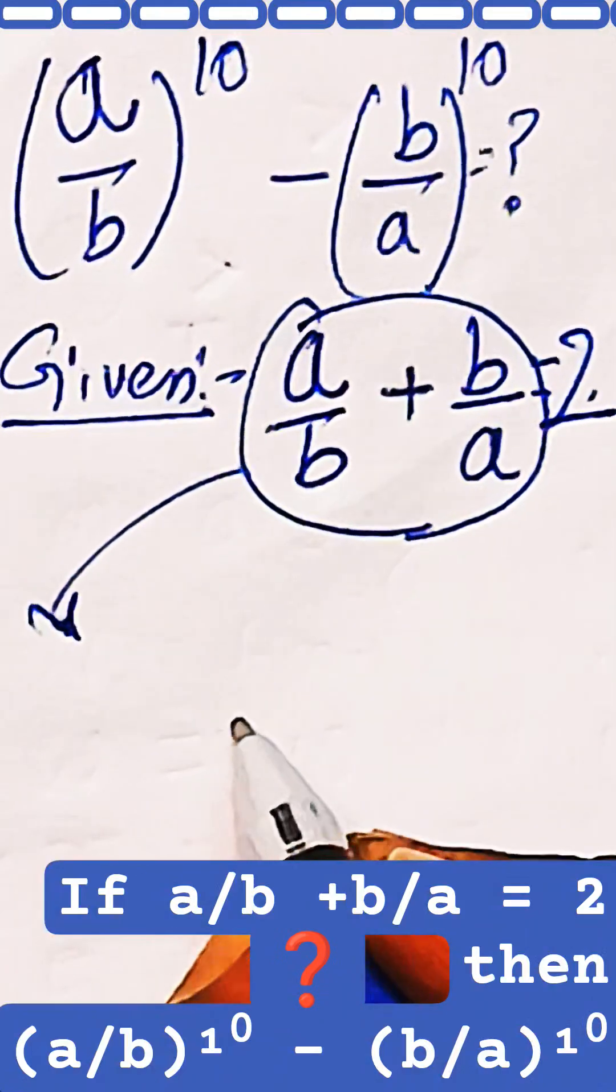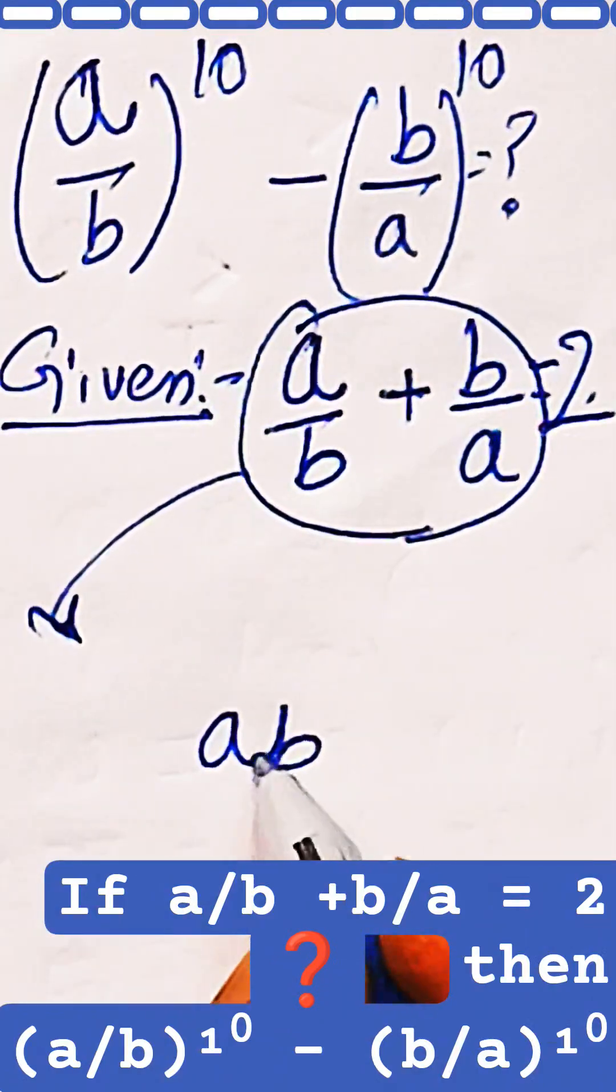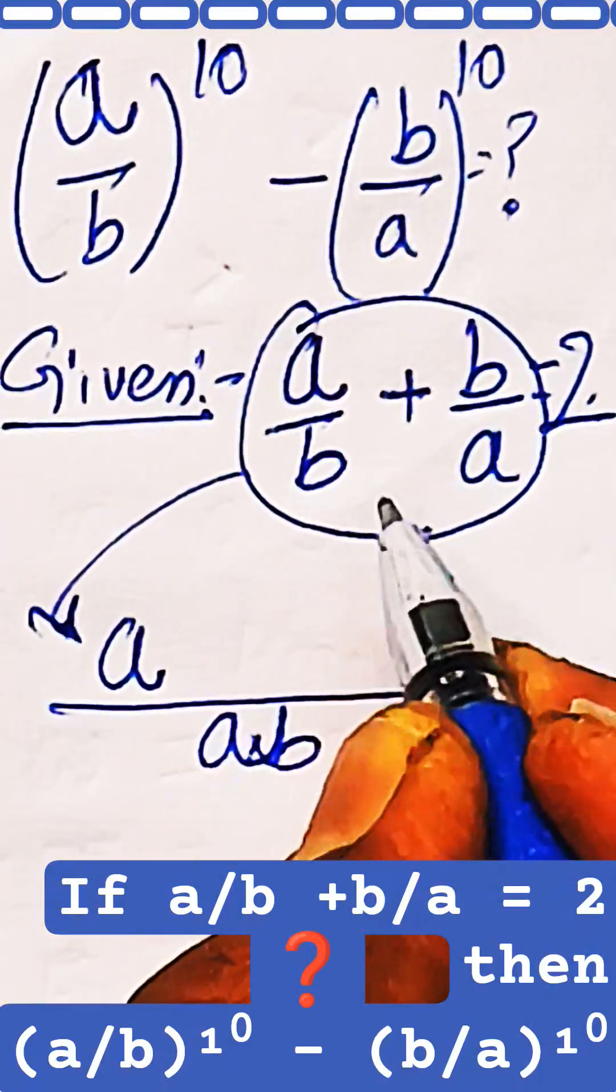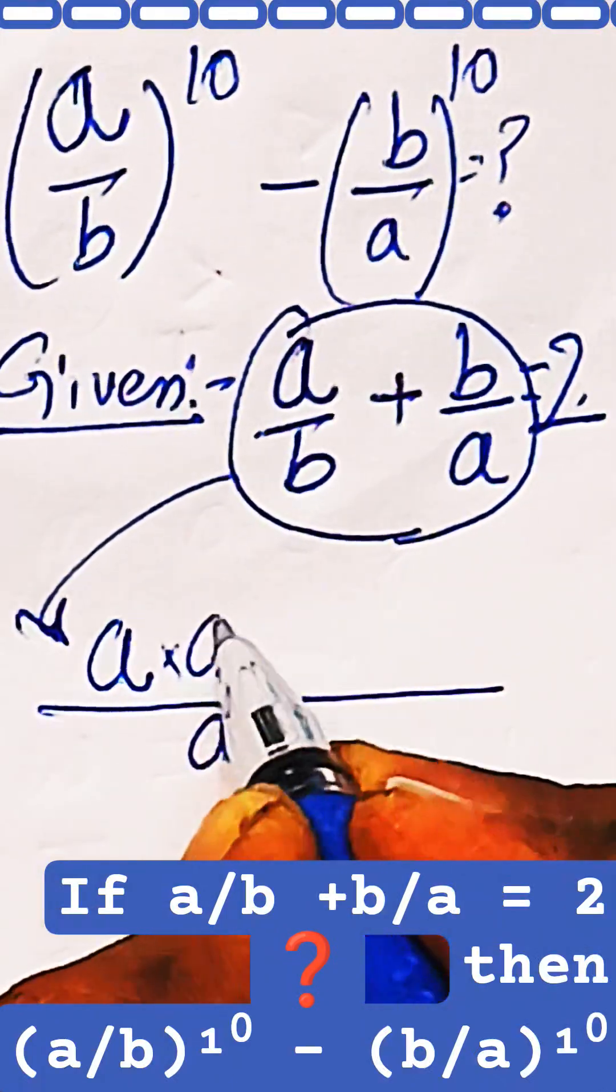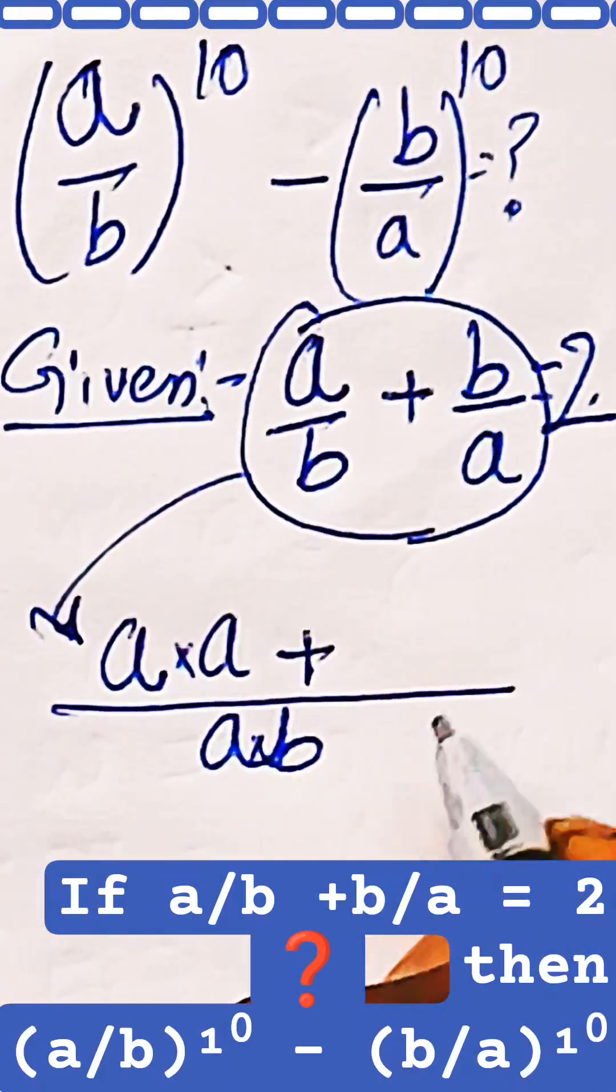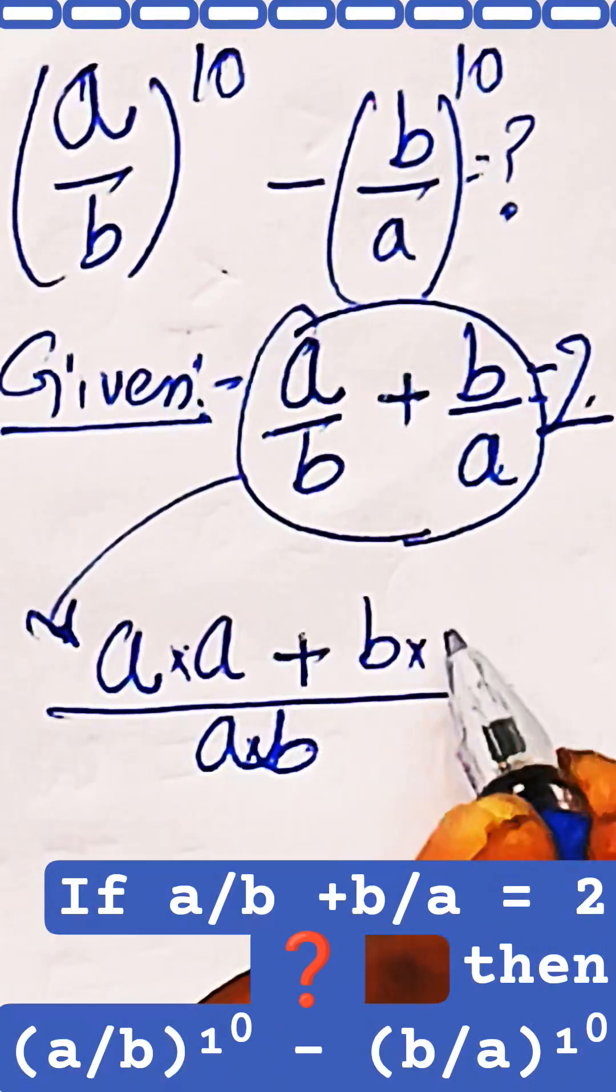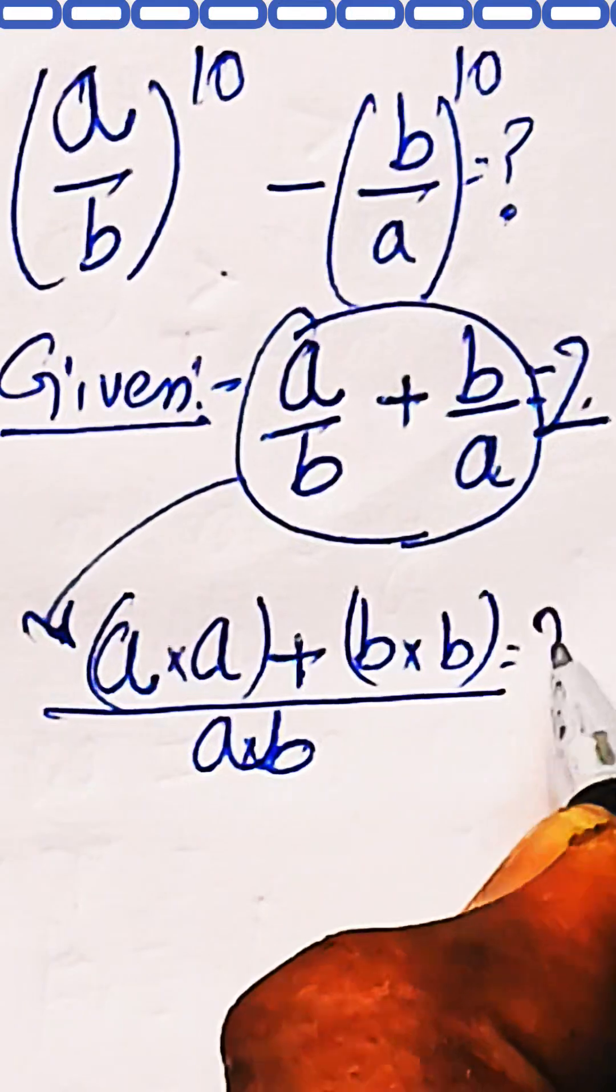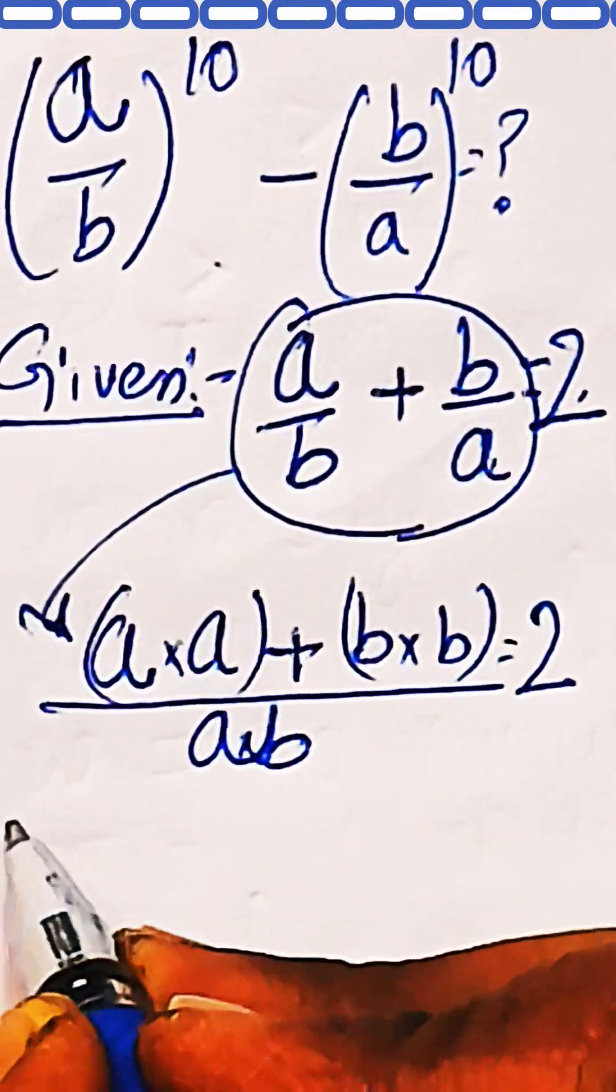That means a/b plus b/a, when taking the LCM of the denominator, becomes ab. Then a will be multiplied with a in the numerator and b will be multiplied with b in the numerator. And all this is equal to 2.